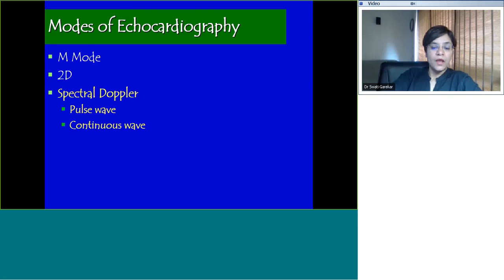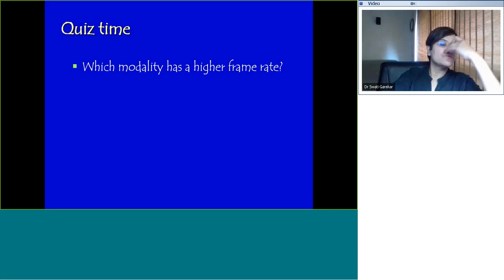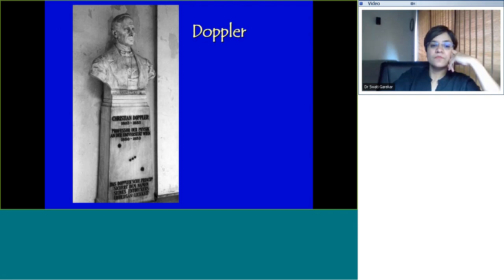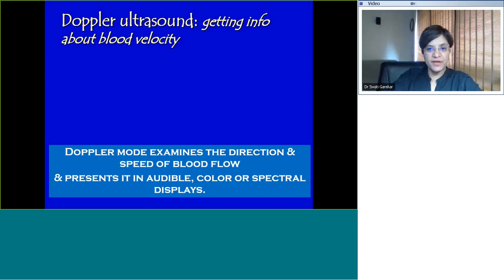Let's move on to spectral Doppler, which is of two types: pulse wave or continuous wave. But before we do that, a quiz question for you. Which modality has a higher frame rate? Would it be 2D or would it be M mode? The correct answer is M mode. M mode has a much higher frame rate. Doppler echocardiography is all thanks to Christian Doppler, a physicist. With Doppler ultrasound we get information about blood velocity. Doppler mode examines the direction and speed of blood flow, that's the velocity, and presents it in three formats: what you can hear, what you can see as color, and what is seen plotted in graphical form.